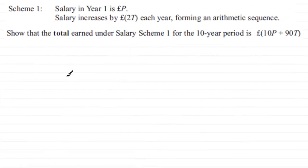Now we're given that a company offers several salary schemes, and one particular scheme, scheme one, is that the salary in year one is p pounds and the salary increases by 2T pounds each year, forming an arithmetic sequence. What we've got to do is show that the total earned under salary scheme one for the 10-year period is 10p plus 90T pounds.